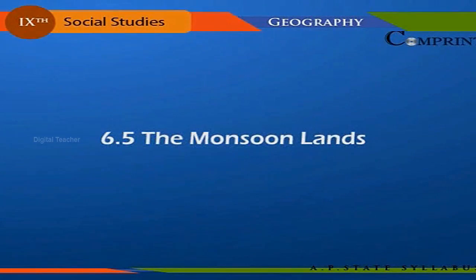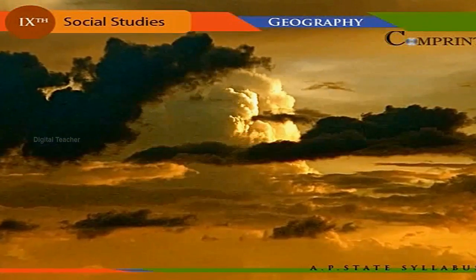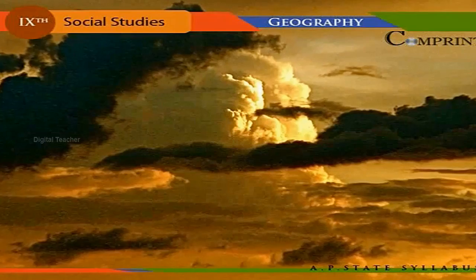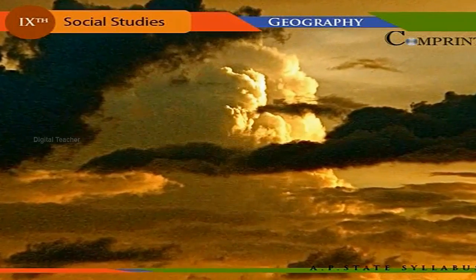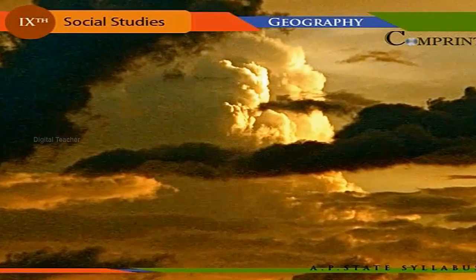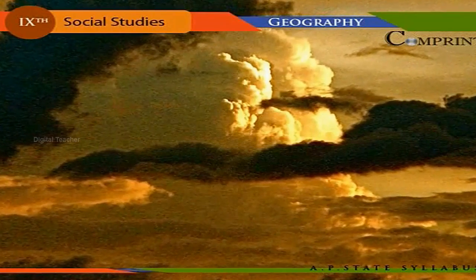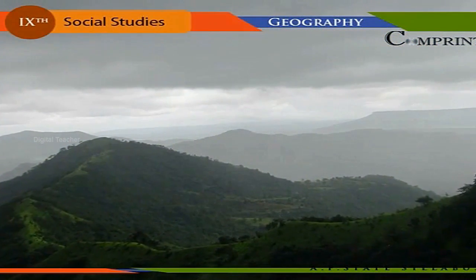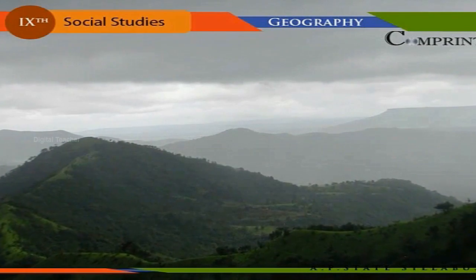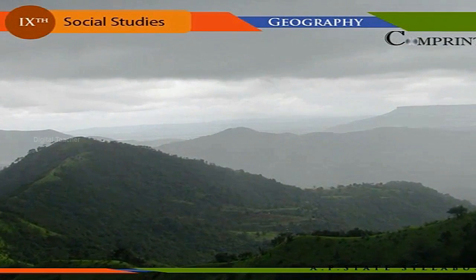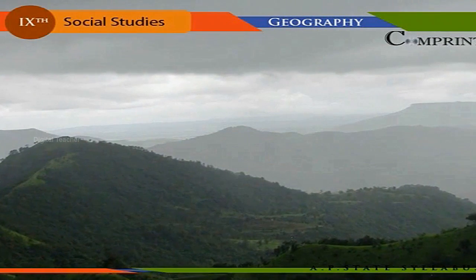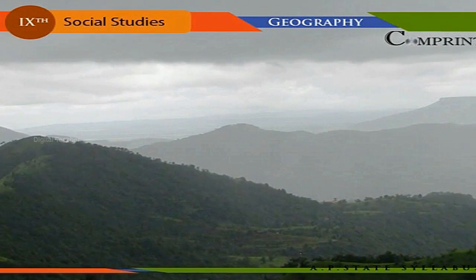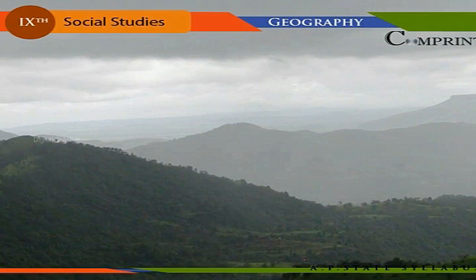The monsoon lands. The word monsoon was coined from an Arabic root 'moosom', which means season. In this region, the year may be divided into seasons, namely the summer, the winter, and the rainy seasons. The temperature is highest just before the beginning of the rainy season. Mawsynram and Cherrapunji, both located in northeast India, are the second and third wettest places in the world respectively. The distribution of natural vegetation is influenced by the distribution of rainfall. Monsoon deciduous forests are the typical type of natural vegetation, and teak wood is the most valuable type of tree.